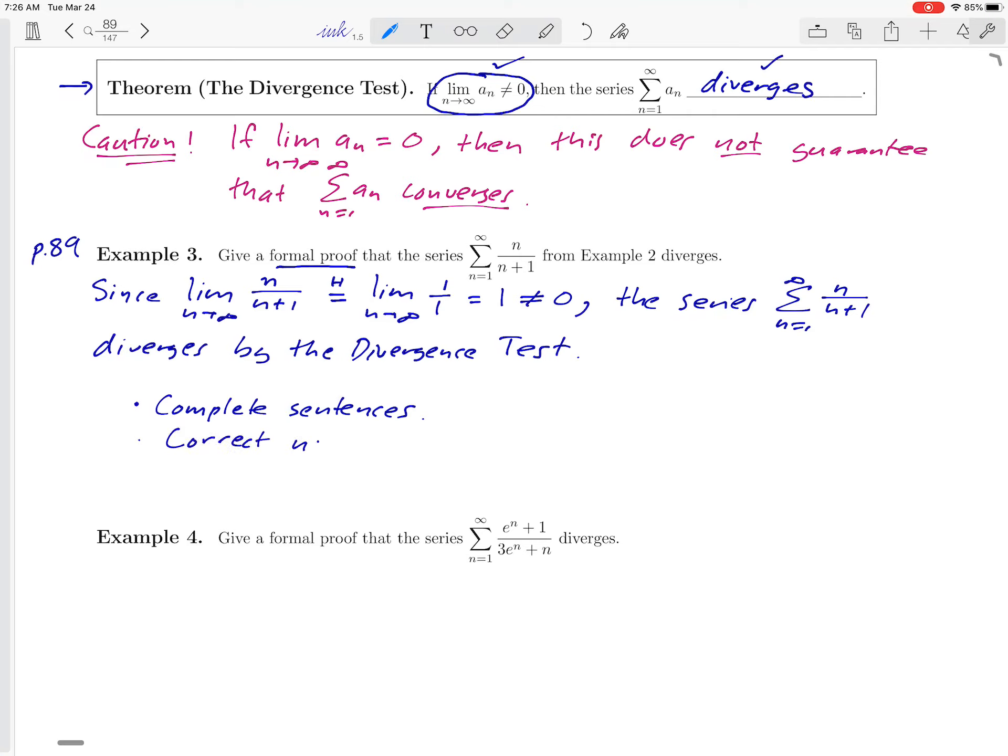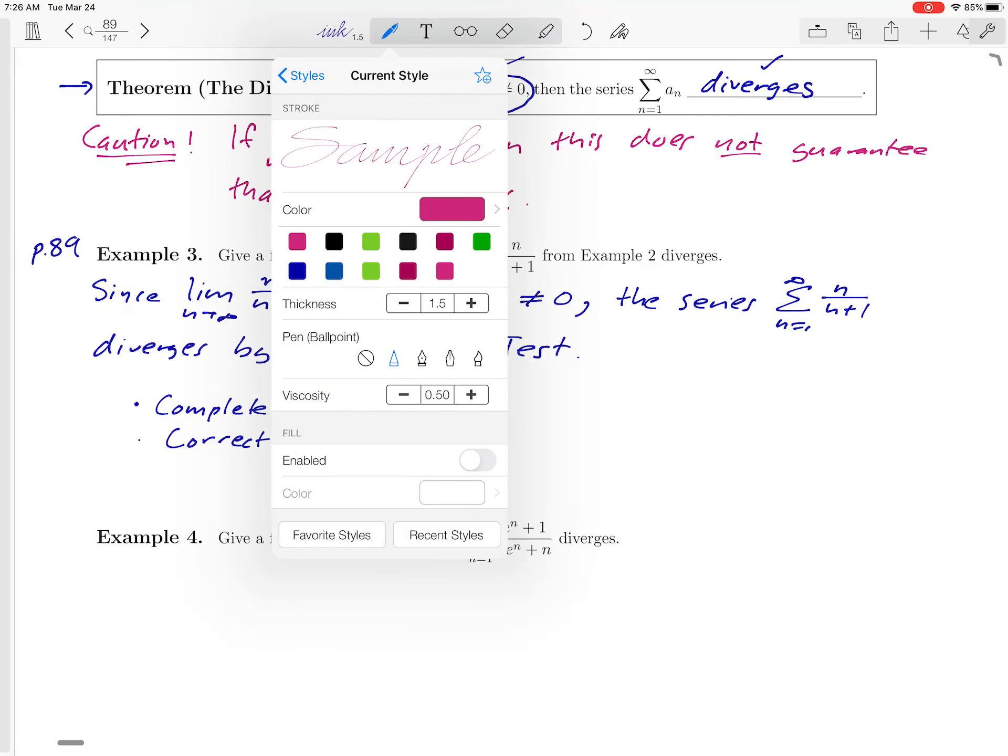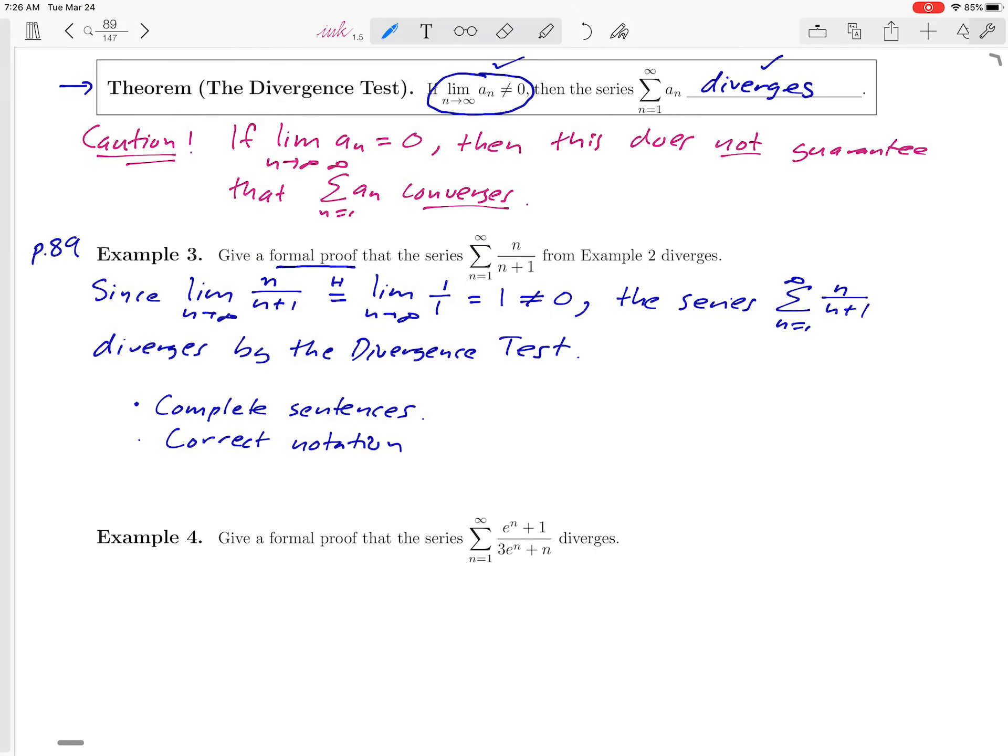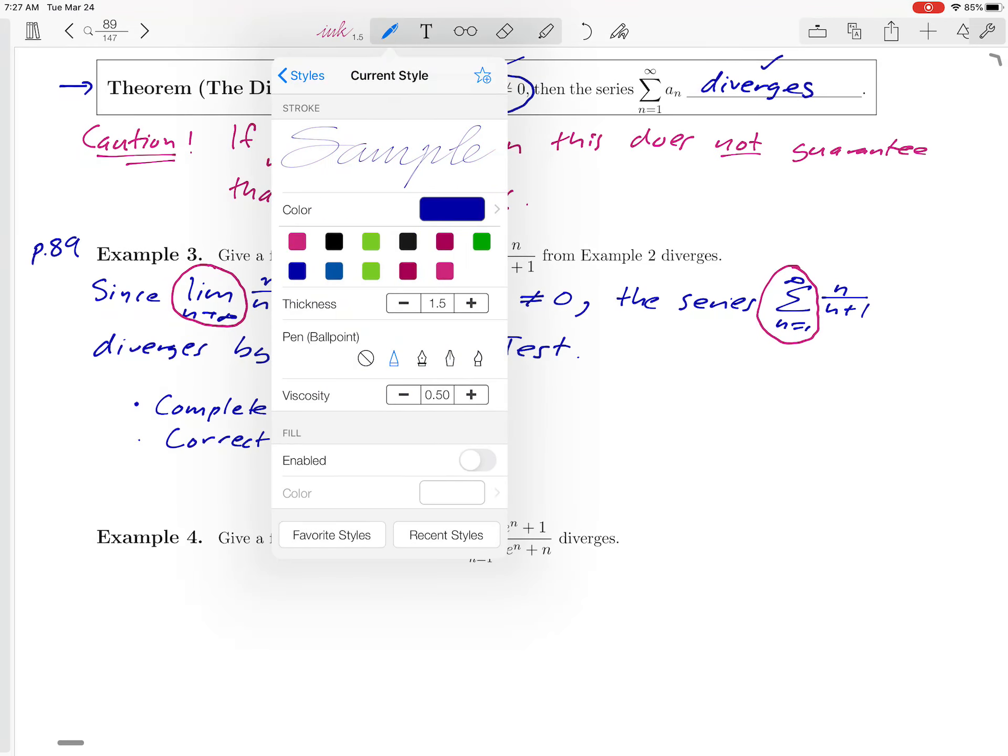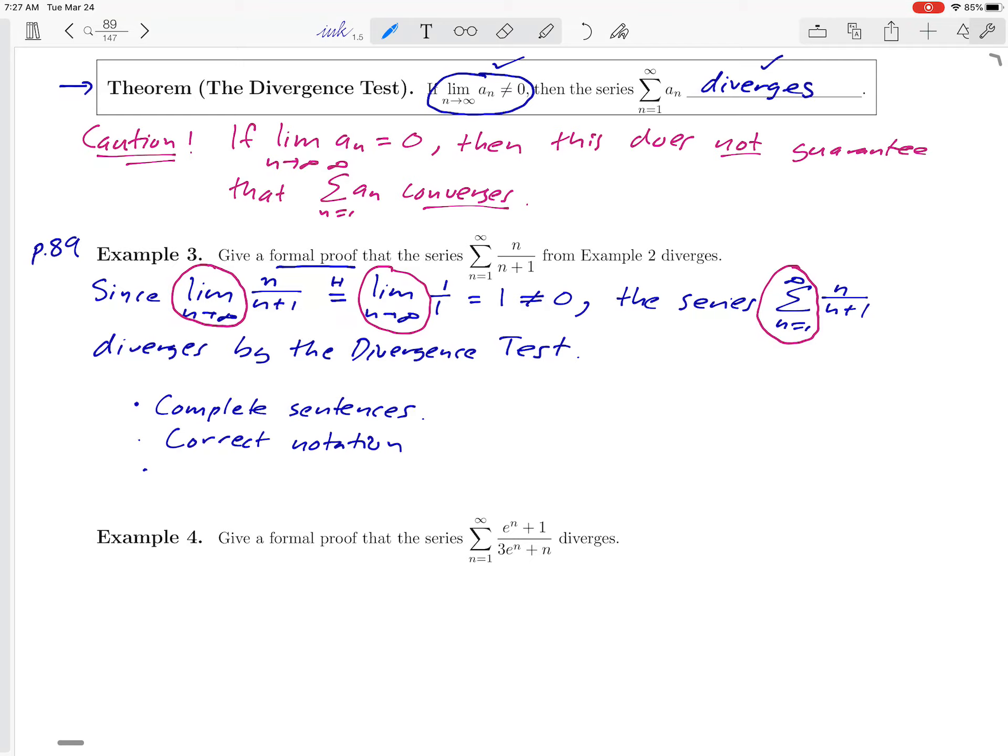Another important feature of mathematical proofs is using notation correctly. And there I'll point you to a couple of things. For example, it's important that we actually write that limit sign to make it clear that we're taking a limit. And also, when we mention the series, it's important that we write the summation sign to make it clear that it's a series that we're talking about. Things like this are important when you write mathematical proofs.